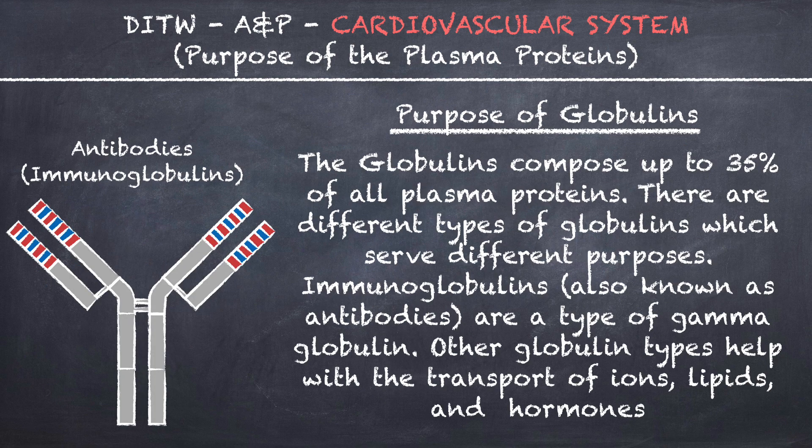The globulins compose up to 35% of all plasma proteins. There are different types of globulins which serve different purposes. Immunoglobulins, also known as antibodies, are a type of gamma globulin. Other globulin types help with the transport of ions, lipids, and hormones.